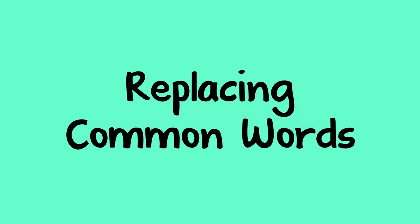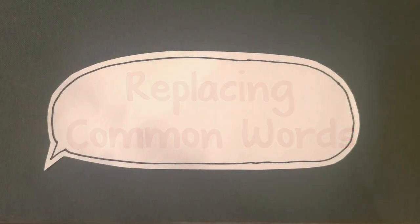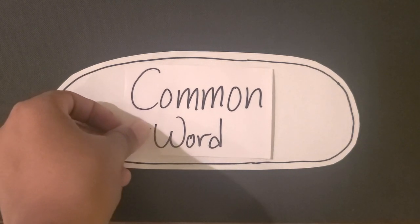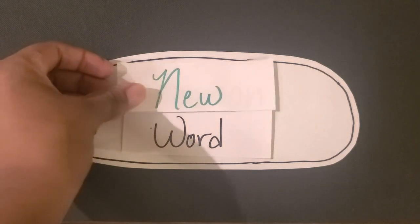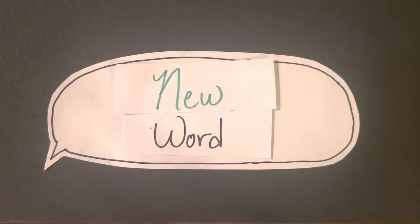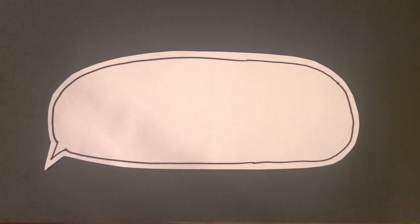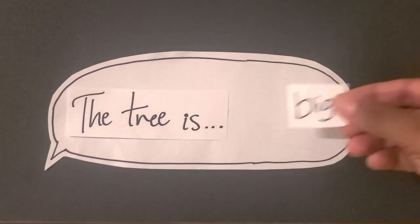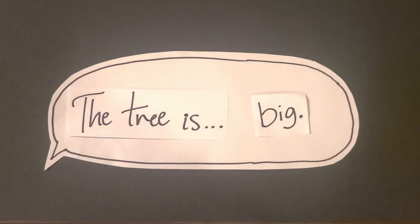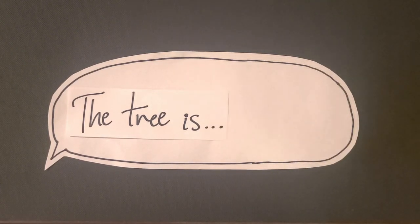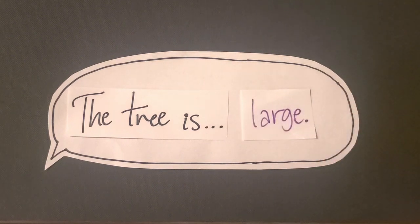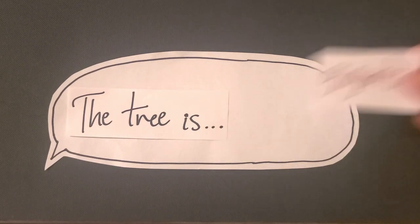You can introduce new words to a child when you speak to them. Instead of using a common word to describe something, try using a similar word that might be new to the child. Instead of saying the tree is big, you can use other words like huge, large, or gigantic.